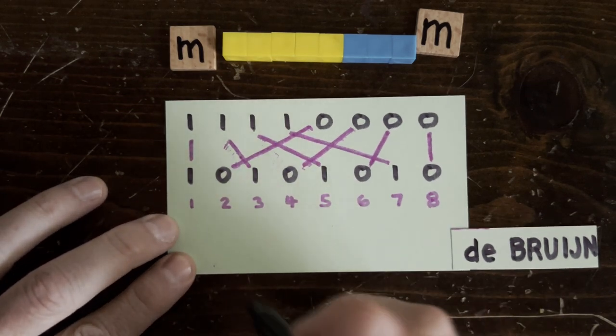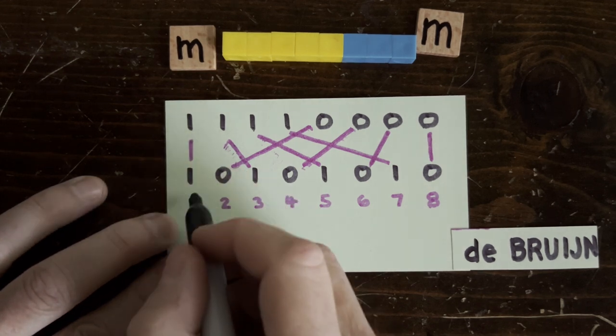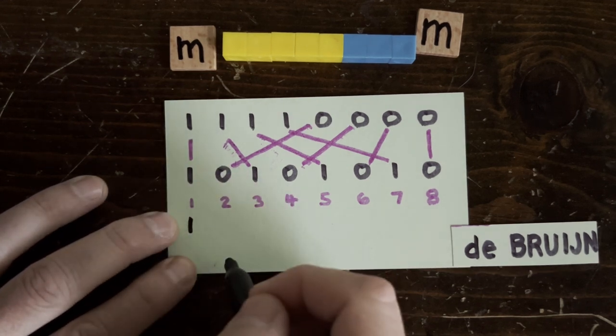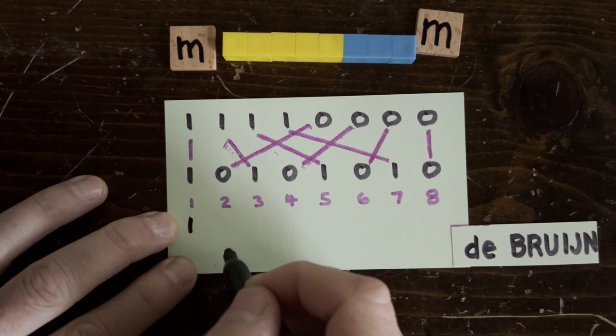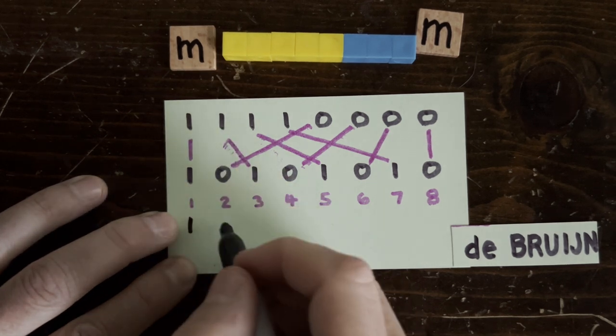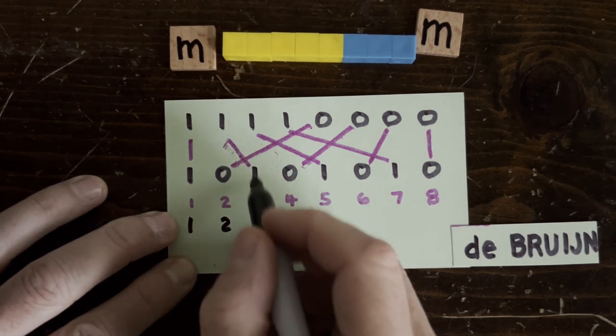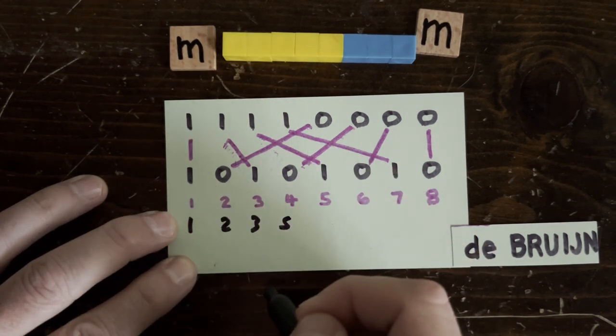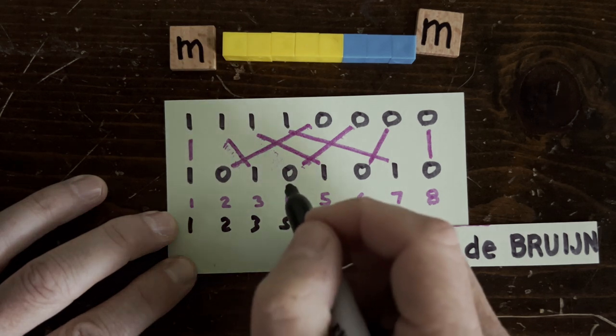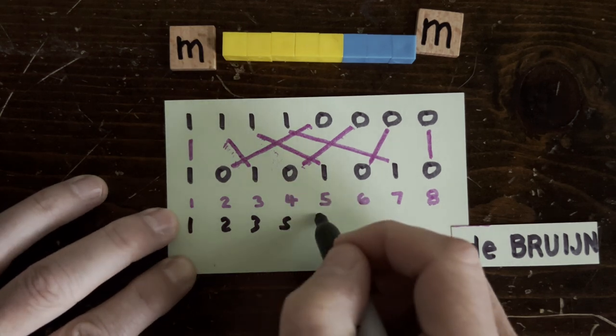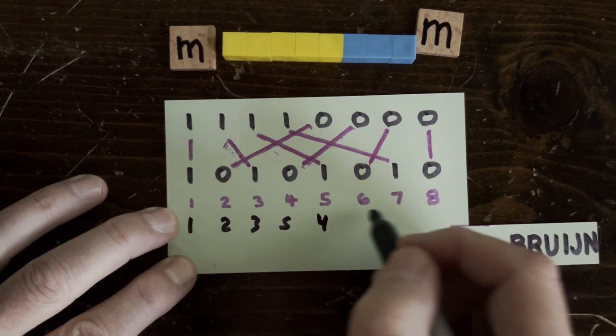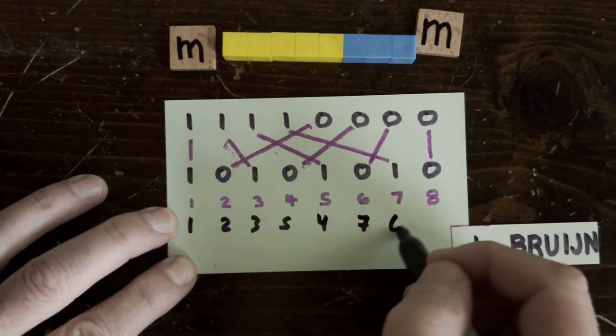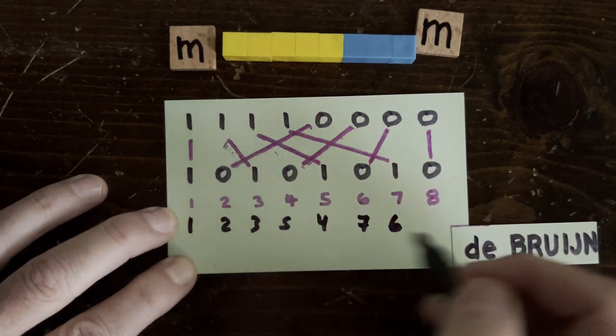Now start with index 1. Go straight up, then follow the link back to 1. Okay, on to the next unprocessed index 2. Straight up, then follow the link to 3. Straight up, follow the link to 5. Straight up, follow the link, then we're back to 2. Okay, and the next unprocessed index is 4. Up and link to 7. Up and link to 6. Then back to 4. Okay, and then what's left over is 8.